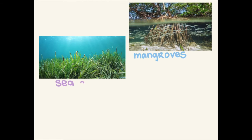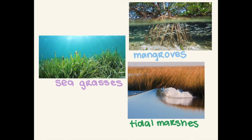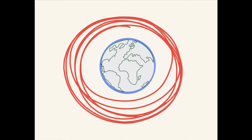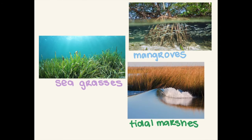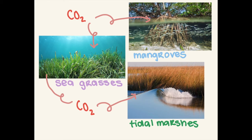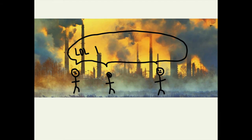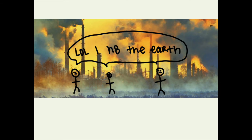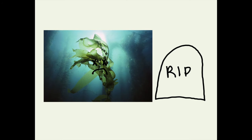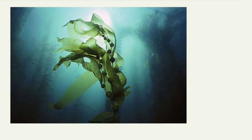One way that carbon is sequestered by the ocean is through coastline plants such as mangroves, sea grasses, and tidal marshes. The global ocean's coastline is actually long enough to wrap around the planet 15 times. These plants can even sequester 2 to 35 times more carbon than phytoplankton. Unfortunately, due to anthropogenic activities, many of these plants and their habitats are being destroyed, ultimately reducing their sequestering abilities.